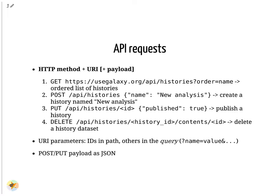In the fourth example, we use the DELETE method to remove a resource from the server. In this case, we request the deletion of a particular dataset in a specific history, as indicated in the URI.